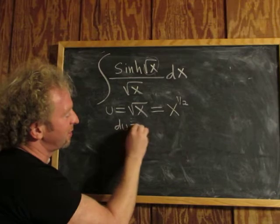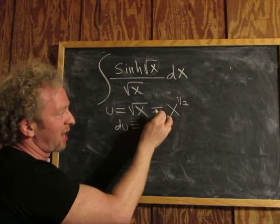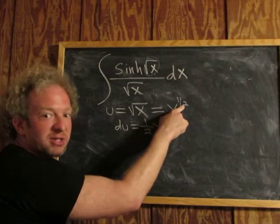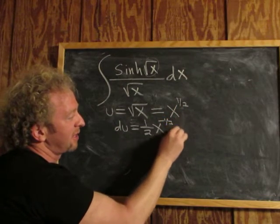Now we can take the derivative. So du, when you differentiate x to the one-half, you put the one-half in the front, then you get x. One-half minus one is negative one-half. Then you get dx.